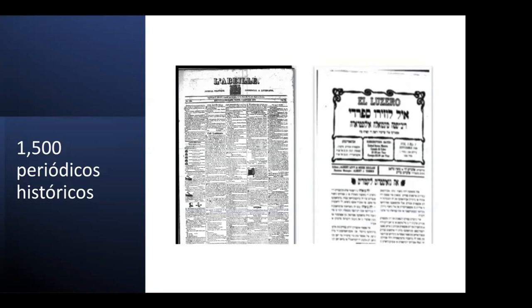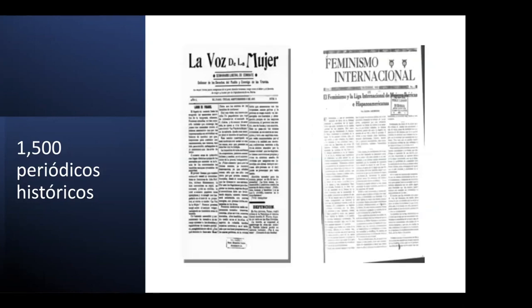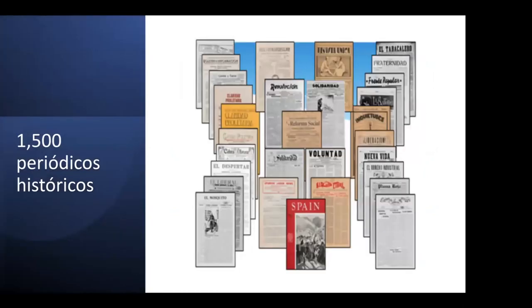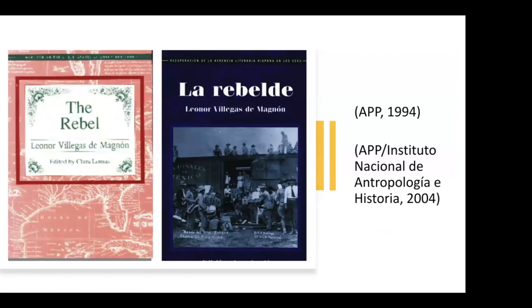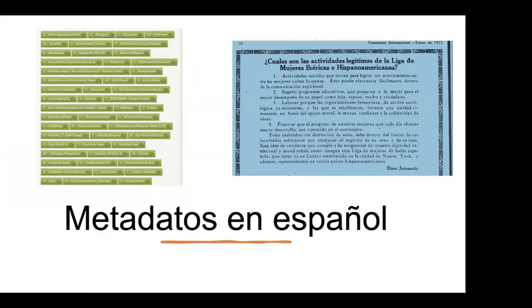La Belle, for example, was published simultaneously in French, English, and Spanish. There were also feminist and anarchist newspapers. Metadata creation from all of this is understood as a decolonial proposal. However, headings in the Library of Congress are found to be highly limited or contain mistaken descriptions of the Latin American community.